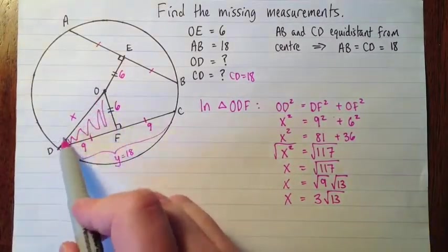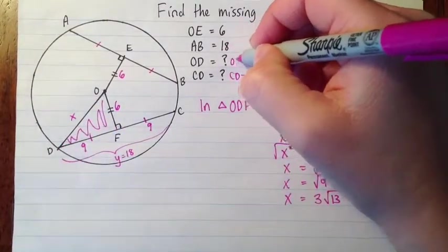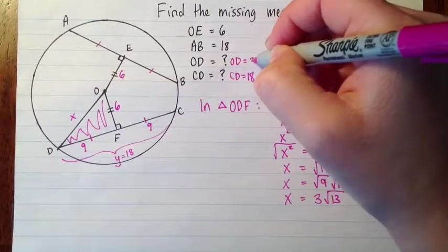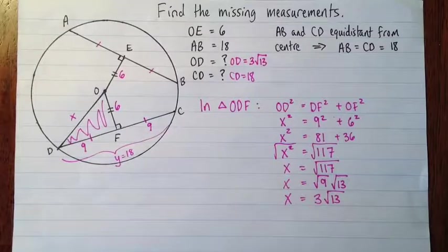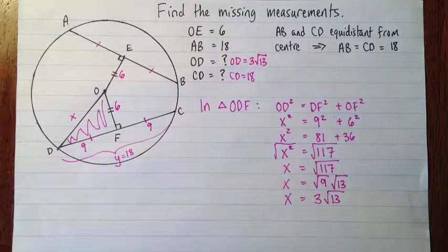So this X, that was OD. So this tells us that OD is equal to 3 root 13. Okay, so we're done.